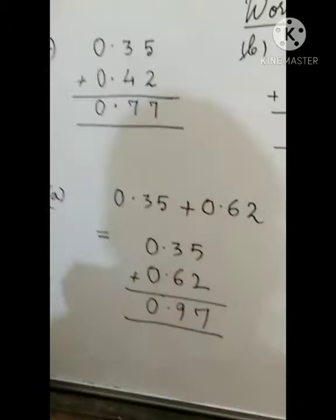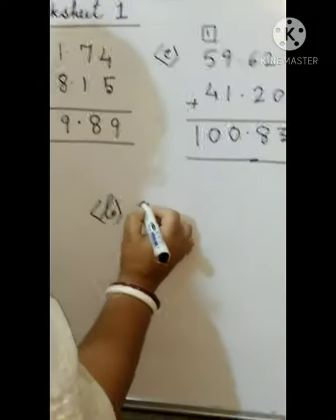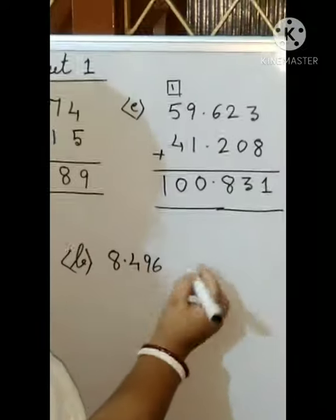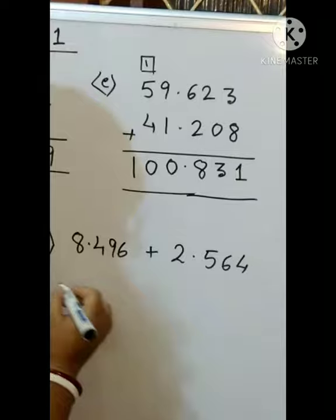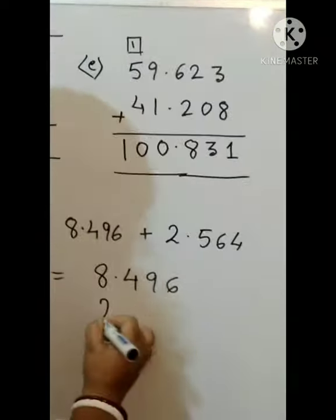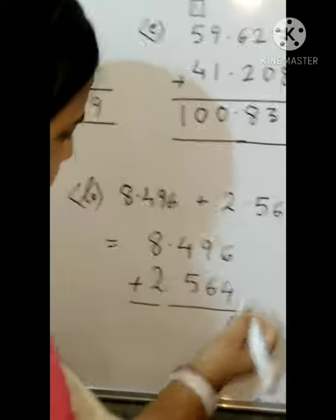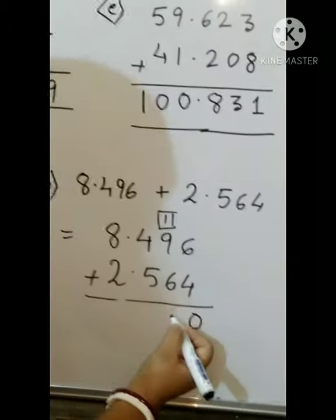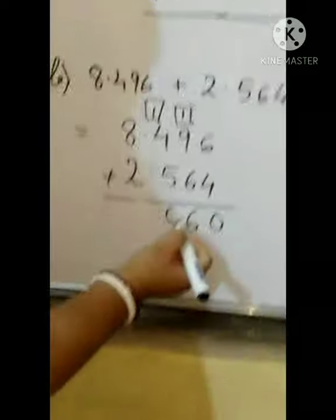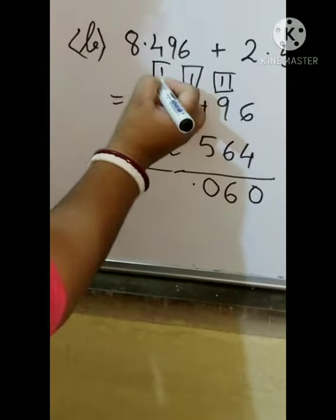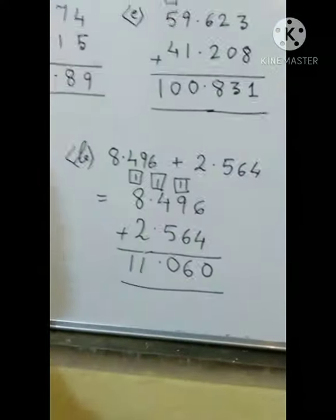Let's solve one more. That will be clear for you and you can solve it on your own. Let's do the next one. B is 8.496 plus 2.564. Now you arrange it: 8.496, 2.564. Now we will add it. So children, 6 plus 4 is 10, 0, 1 carry. 9 plus 1 is 10, 10 plus 6 is 16, 6, again 1 carry. Then 1 plus 4 is 5, 5 plus 5 is 10, 0. This decimal here, and 1 will carry to this side. 8 plus 1 is 9, 9 plus 2 is 11. So the answer is 11.060. I hope it's clear now.